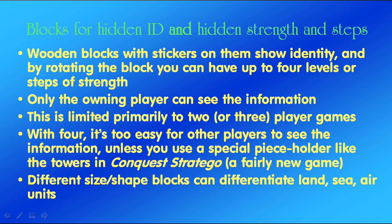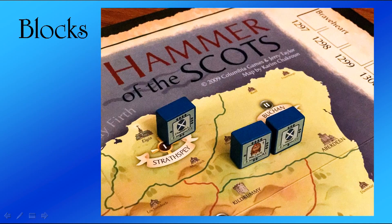Now, blocks for hidden ID and hidden strength and steps — and perhaps this is why block games are very popular nowadays. Wooden blocks with stickers on them show the identity, and by rotating the block you can have up to four levels or steps of strength. Only the owning player can see this information ordinarily. Unfortunately this technique is limited primarily to two or three player games; with four it's too easy to see other players' information unless you use a special piece holder like the towers in Conquest Stratego, which is a relatively new game. Different sizes and shapes of blocks can differentiate land, sea, and air units, or pikemen versus cavalry and so on. There's an example of blocks from a well-known block game.